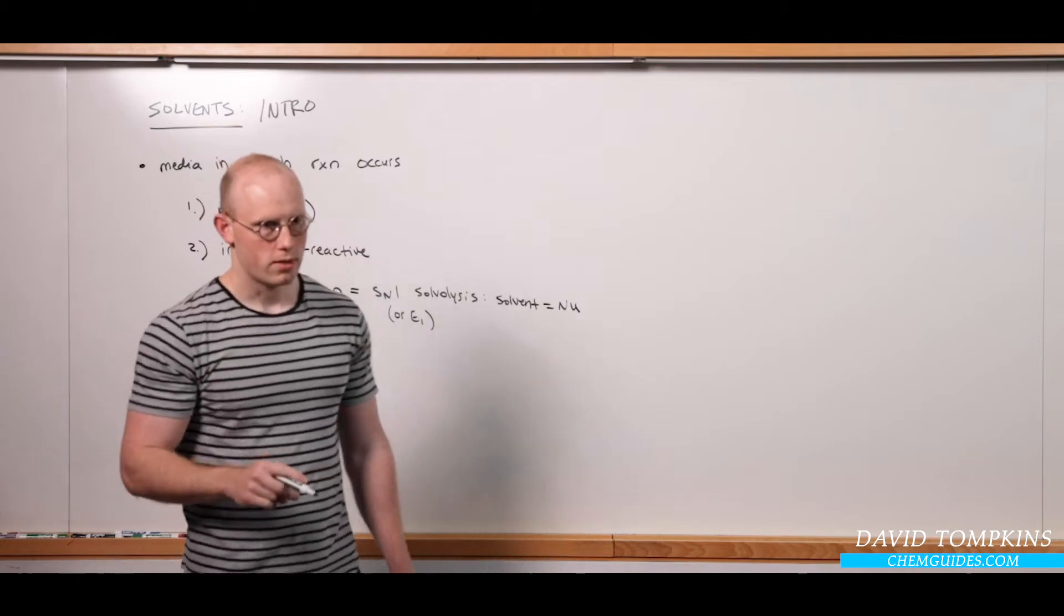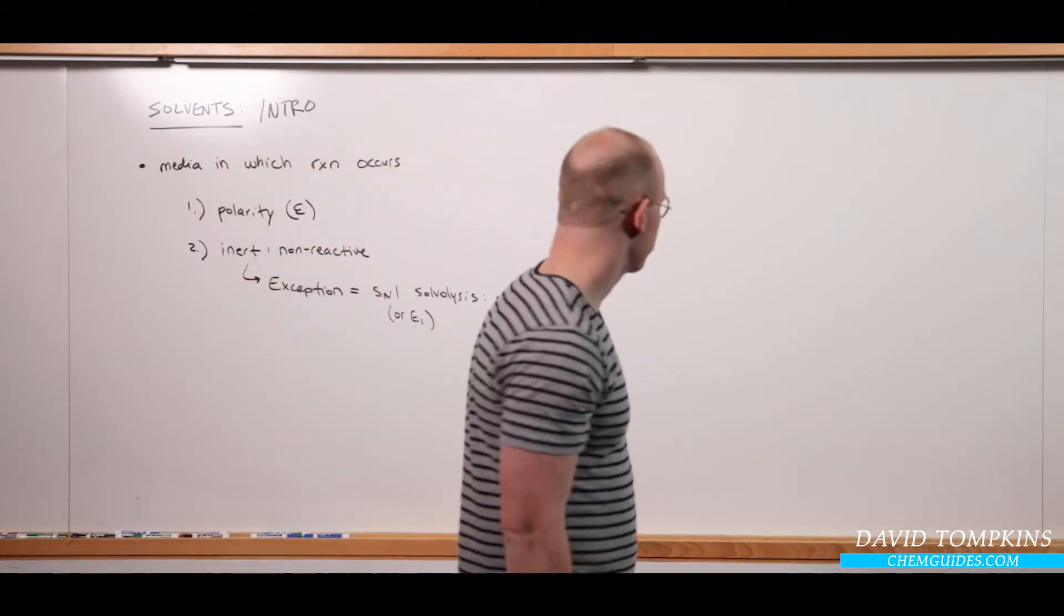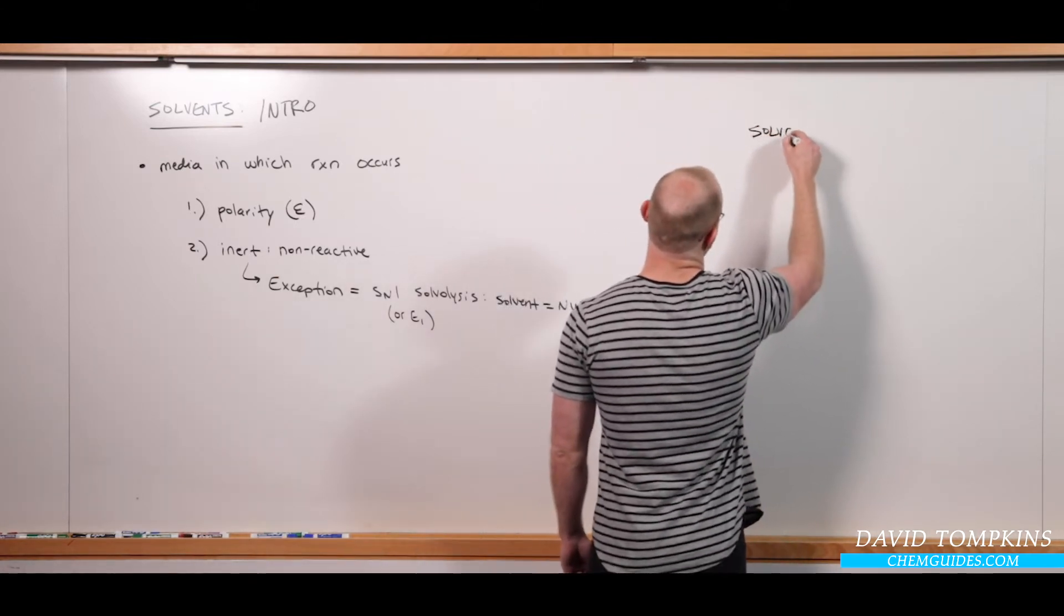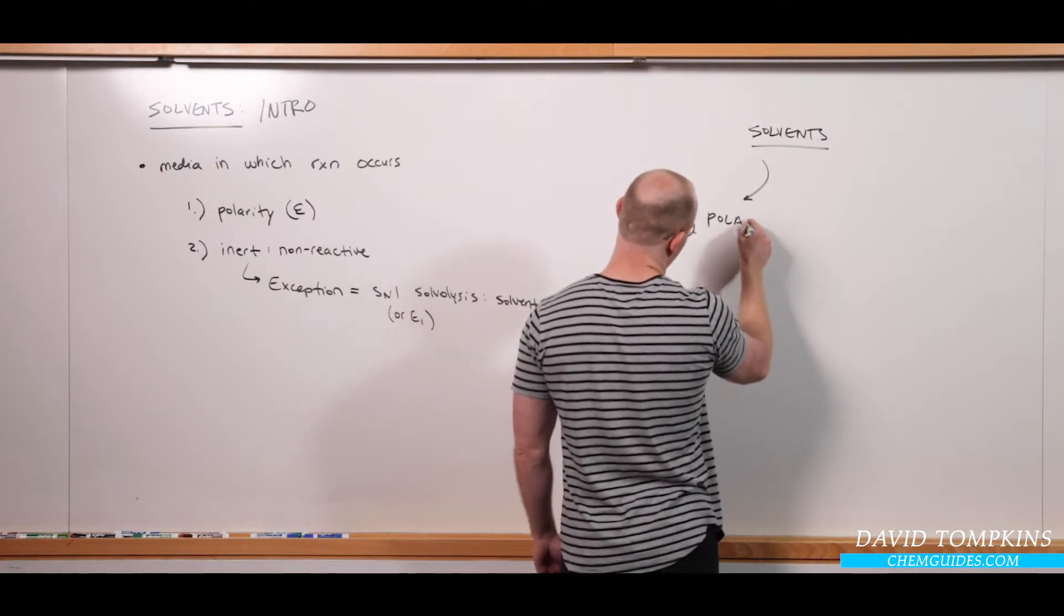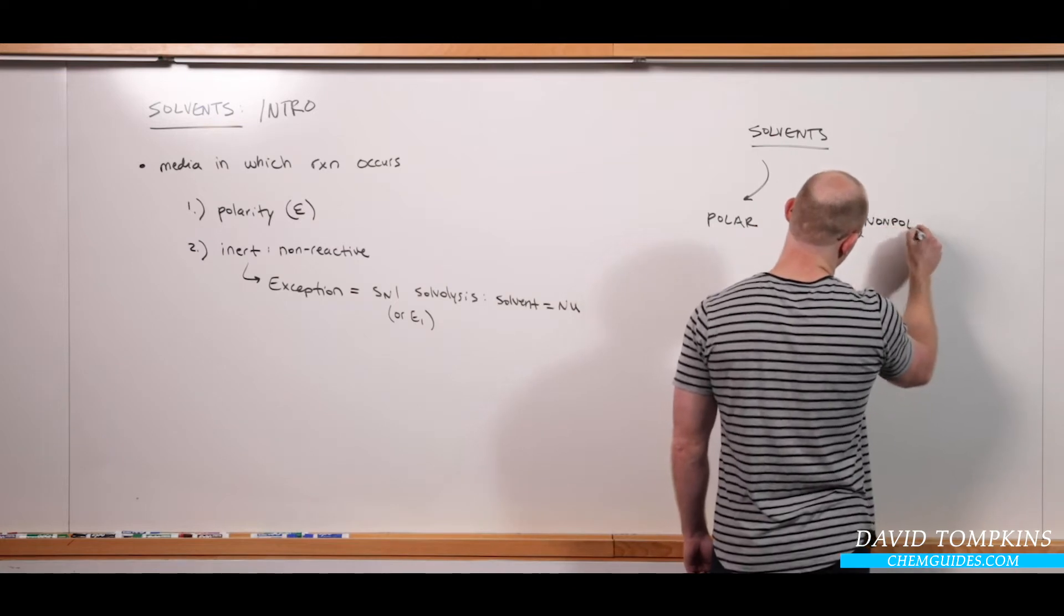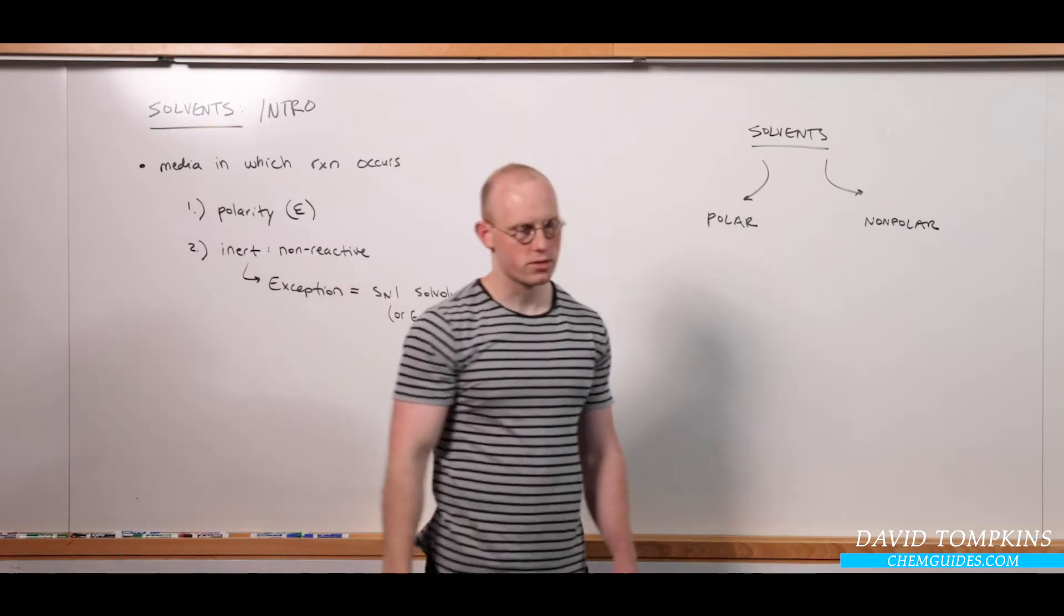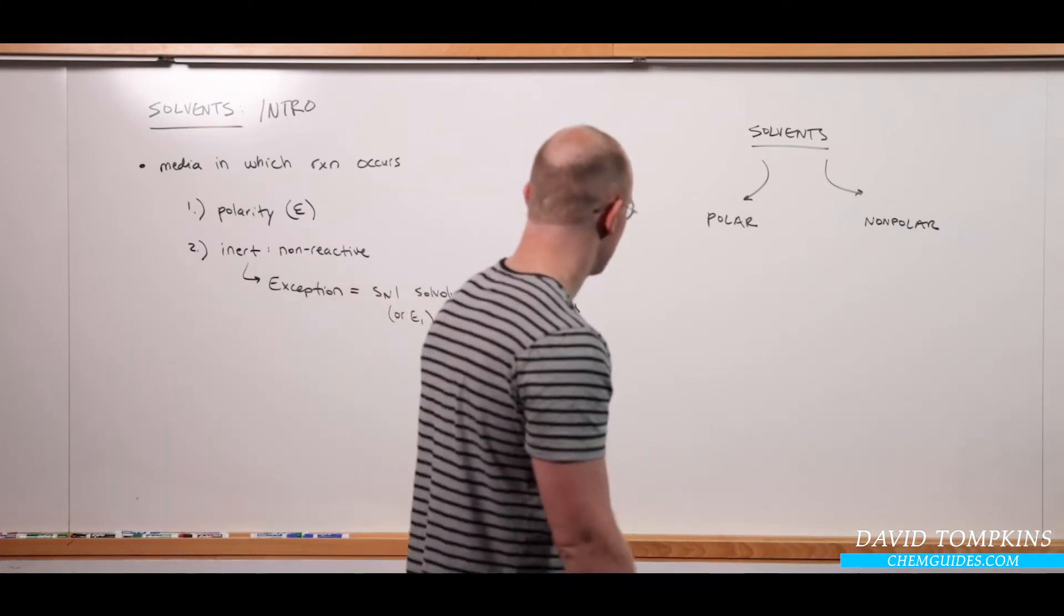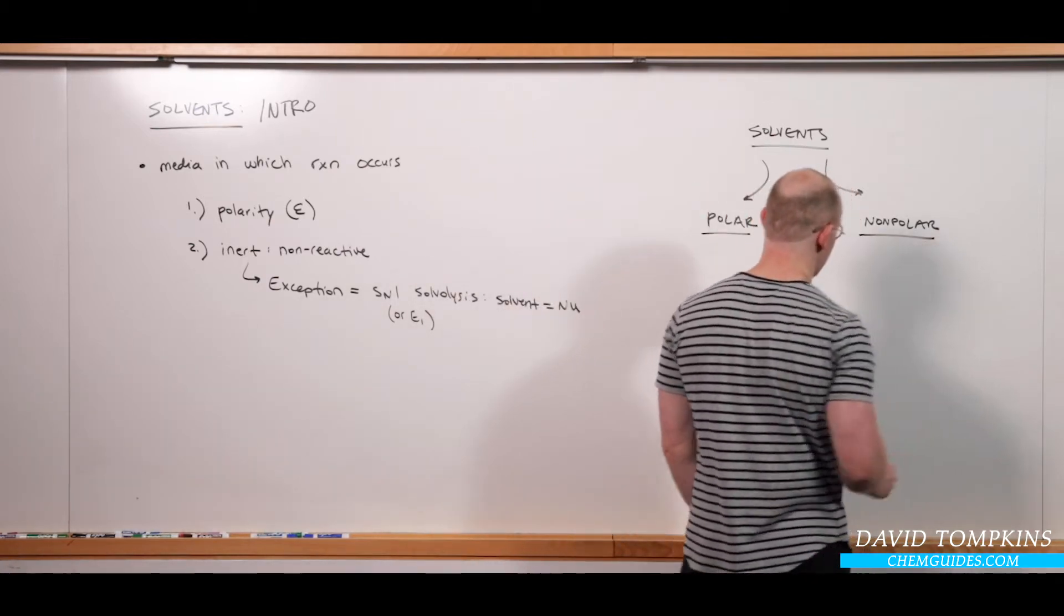So when I think of solvents, I generally first categorize them into two broad groups. And you should do the same. There are those that are polar, and those that are nonpolar. And these terms are relative. There are scales of polarity. But I'll give you some examples, and we'll talk about how we have a cutoff of what we call polar versus nonpolar.